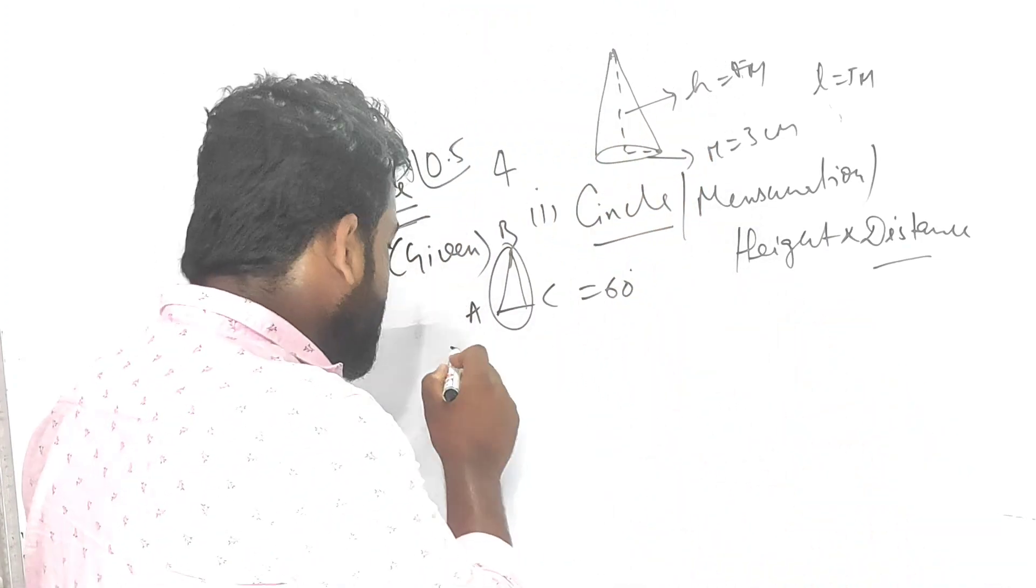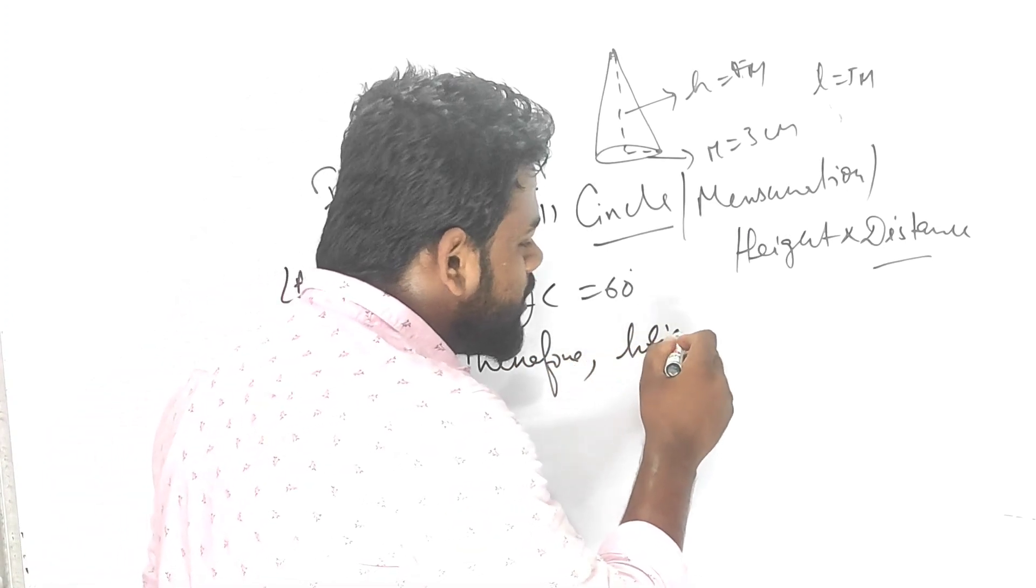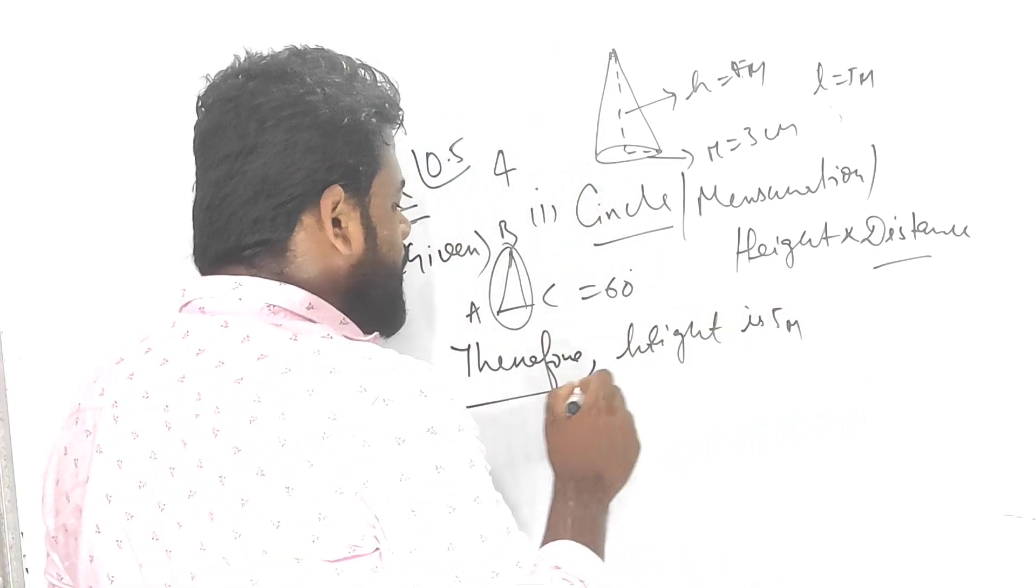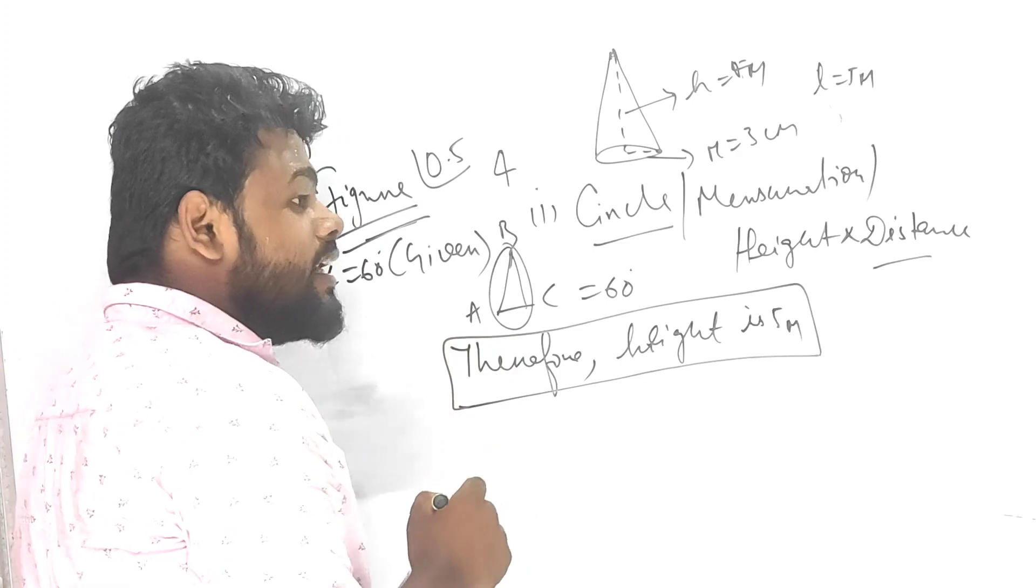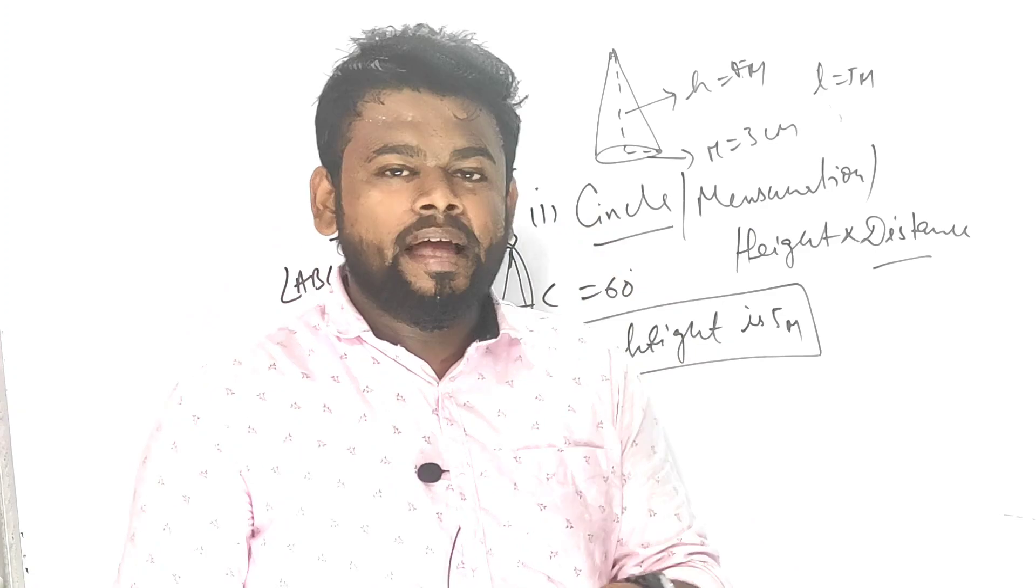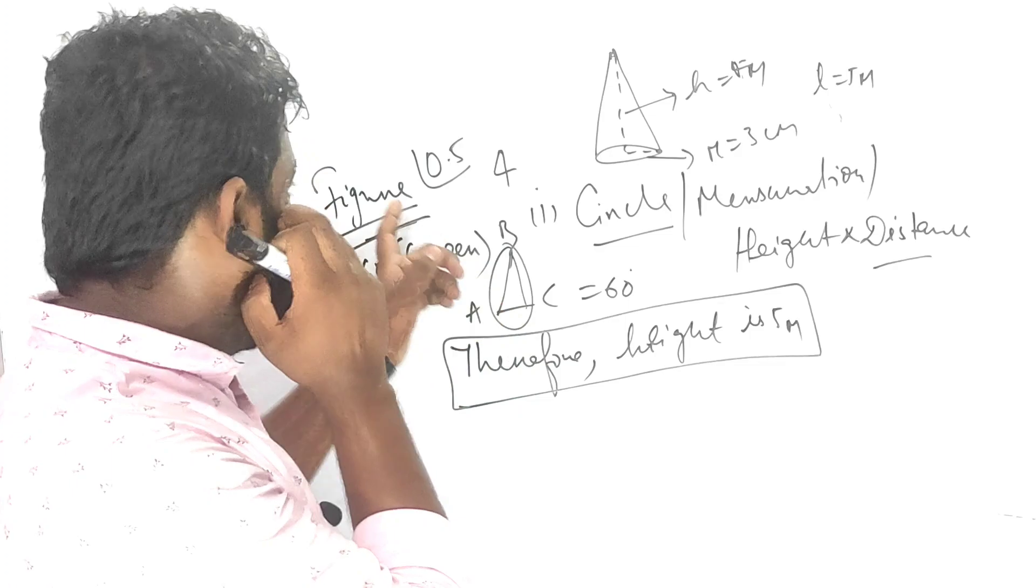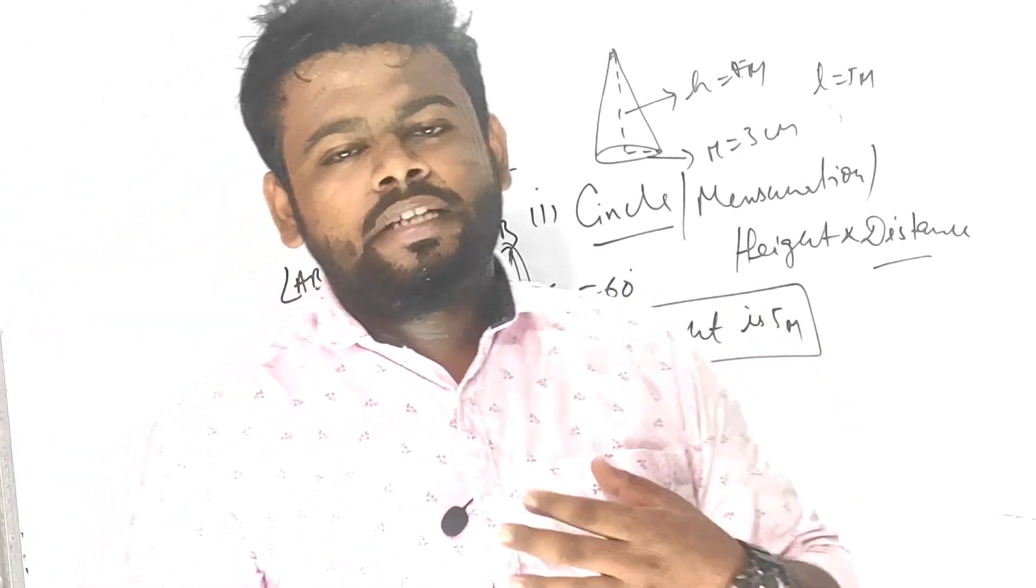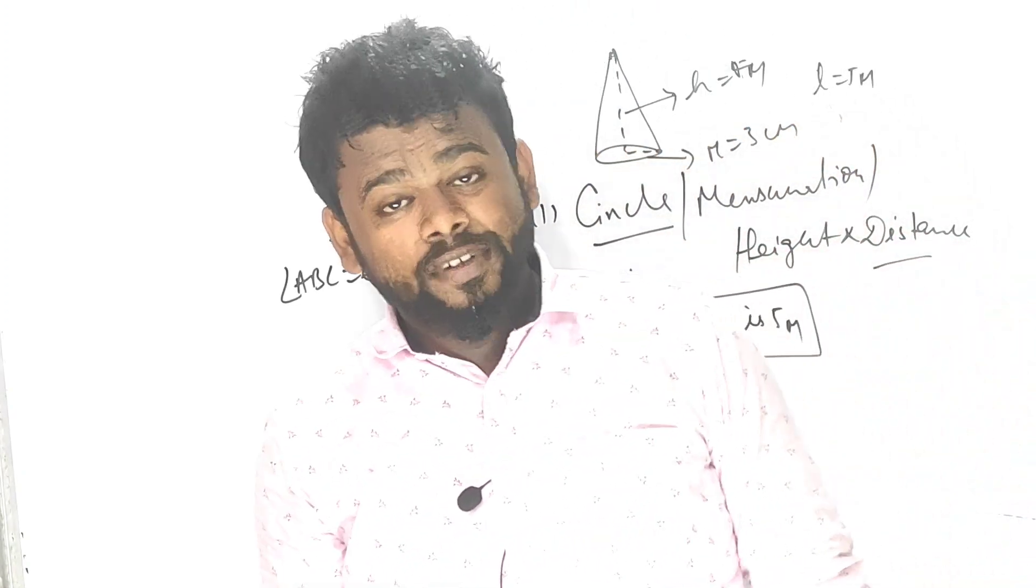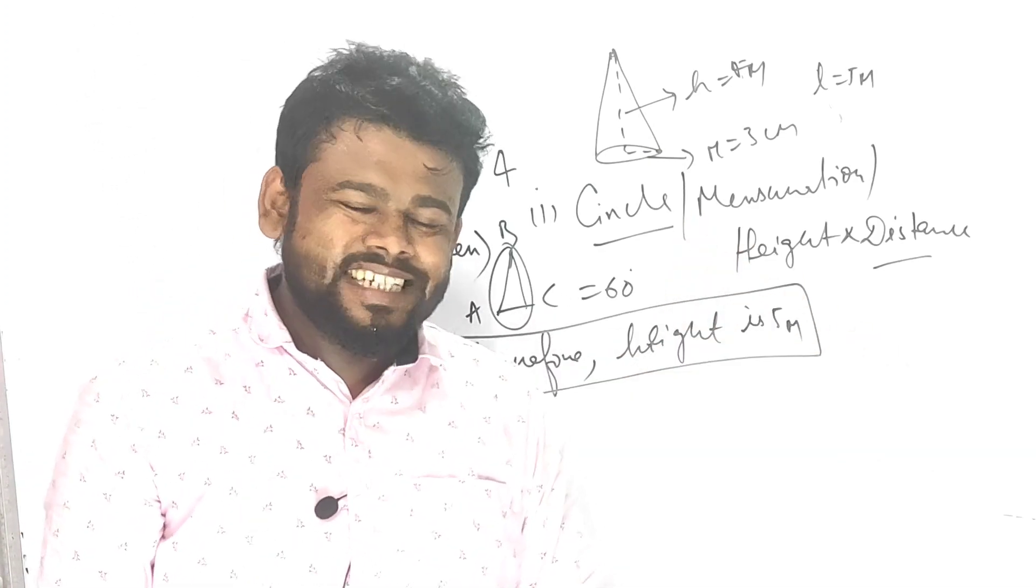Remember, after writing the answer you have to write therefore. Therefore dash height is, suppose in case of mensuration or height and distance, five meters. After that, the pencil will be there. You have to draw the figure with the help of pencil only. If you draw a figure with a pen, you will score very few marks or no marks. Directly the examiner will cut. Pen is prohibited. You cannot draw a figure with the help of pen. You can draw only with pencil.